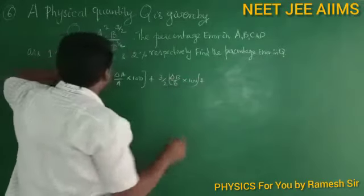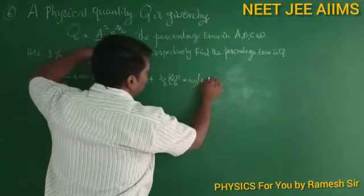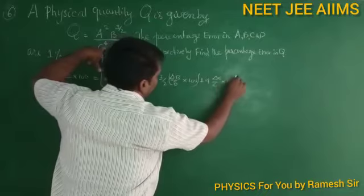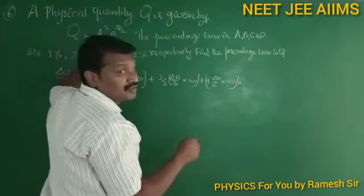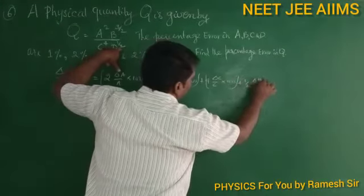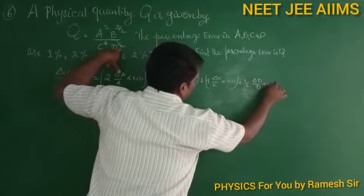Plus 4 times del c by c into 100 plus 1/2 times del d by d into 100.